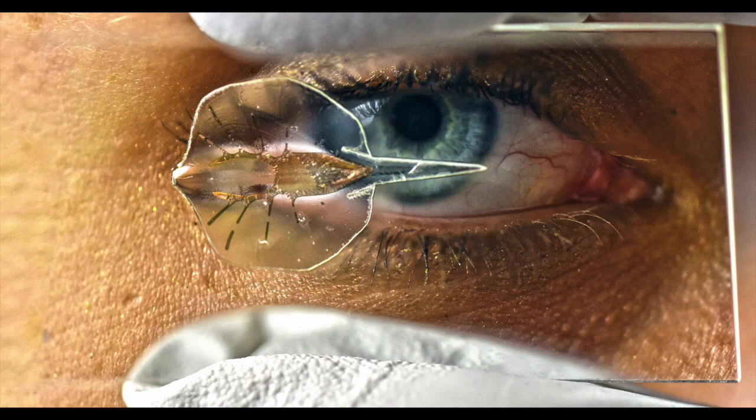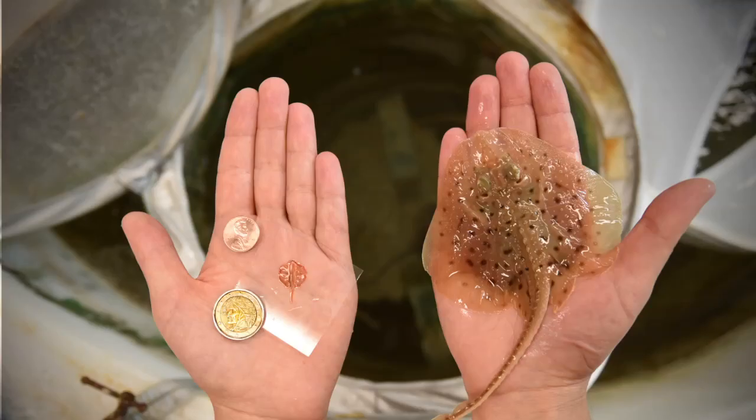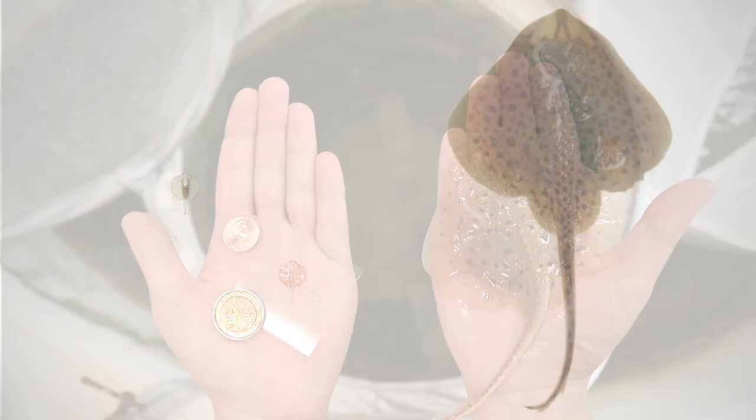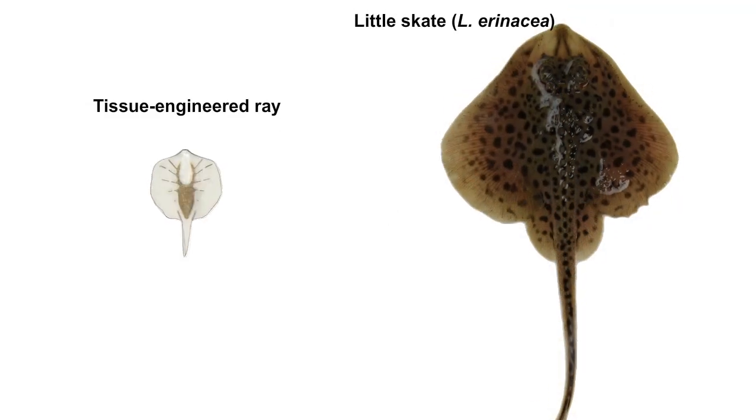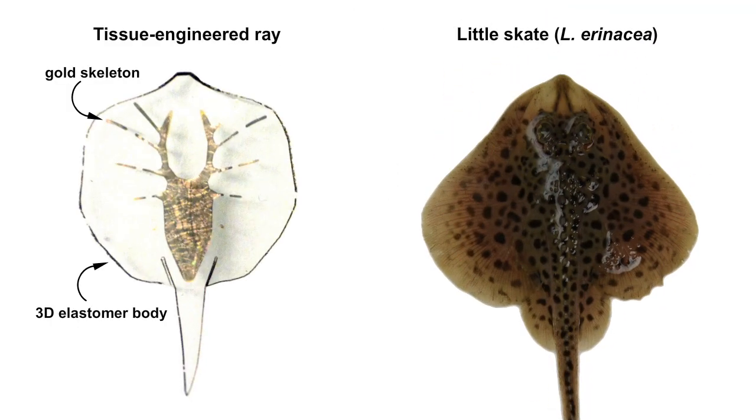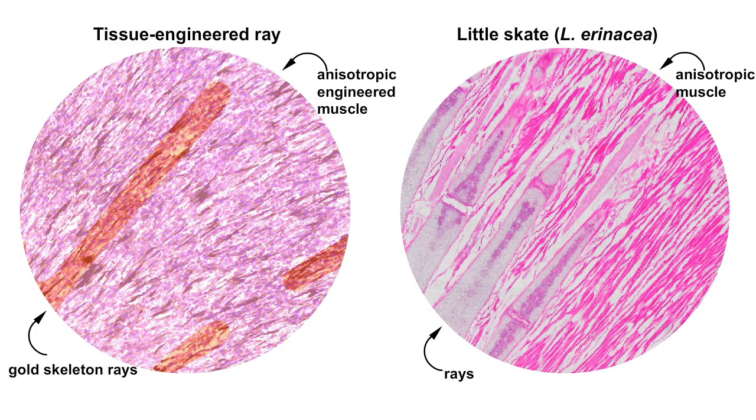A team of researchers at Harvard have found a way to meld bio-inspiration with robotics and cybernetics. They created a fully controllable robotic ray that uses light-activated rat muscle cells to swim.